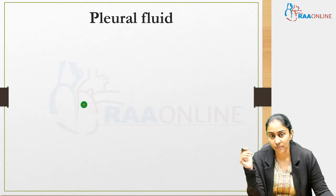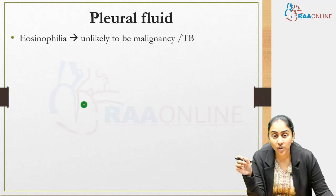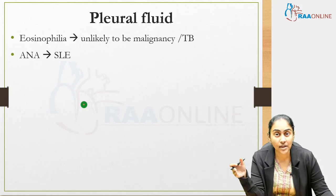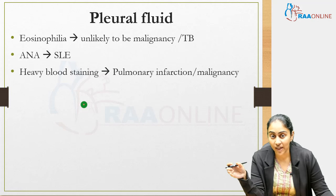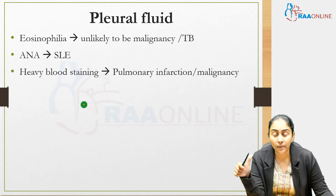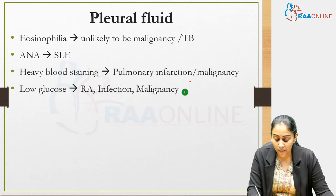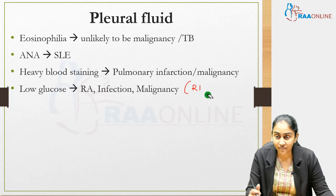Pleural fluid analysis is frequently examined. Pleural fluid eosinophilia makes malignancy or TB unlikely. A positive pleural fluid ANA points to SLE. Heavy blood staining of pleural fluid suggests either pulmonary infarction or malignancy. Low glucose in pleural fluid points to rheumatoid arthritis, infection, or malignancy.